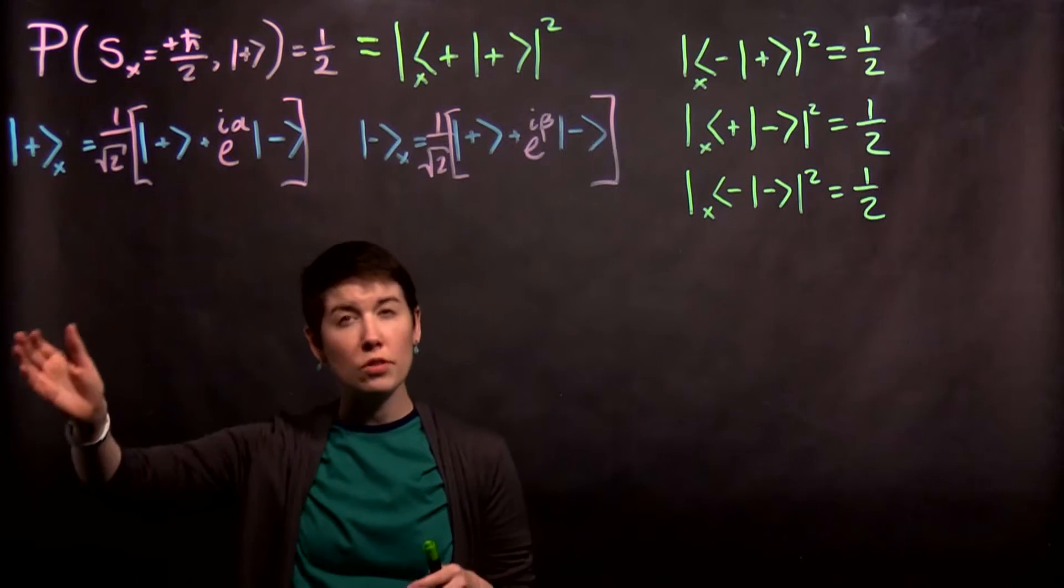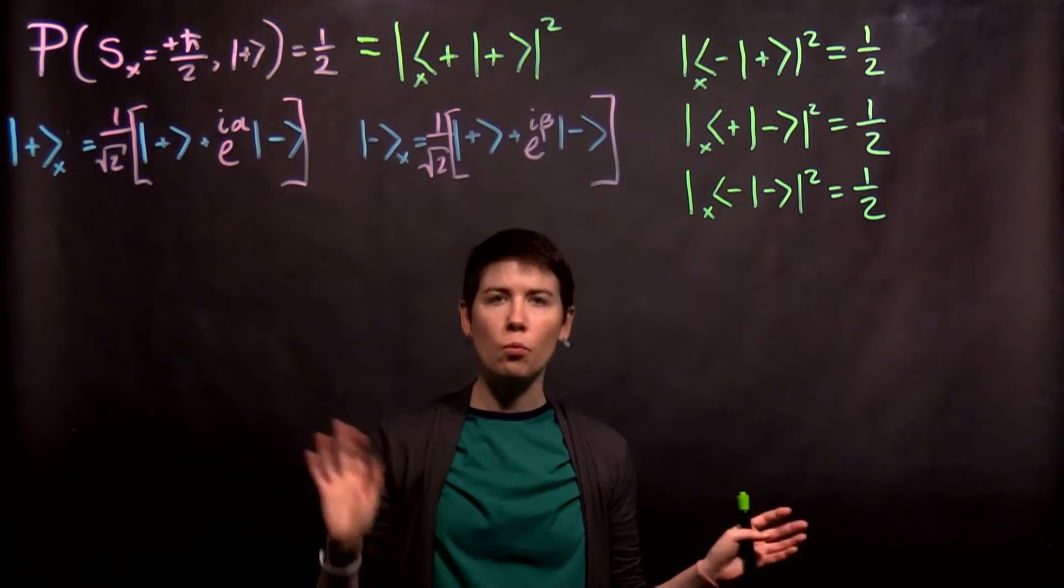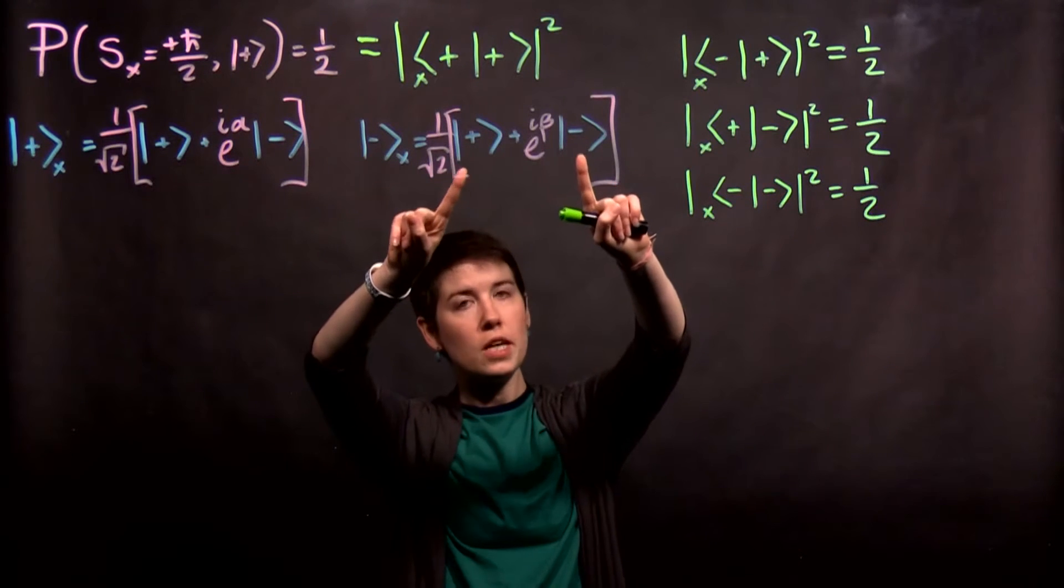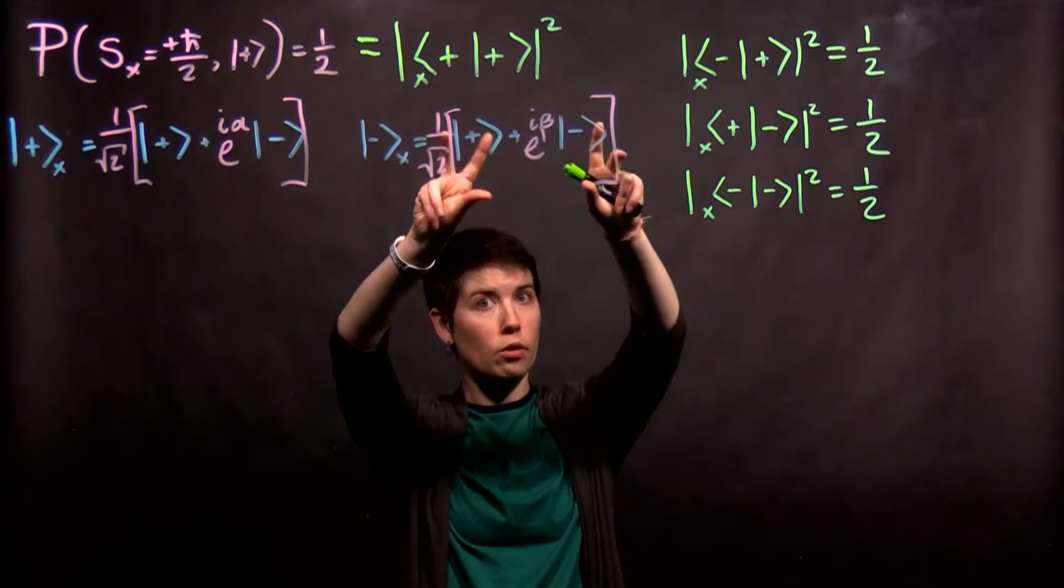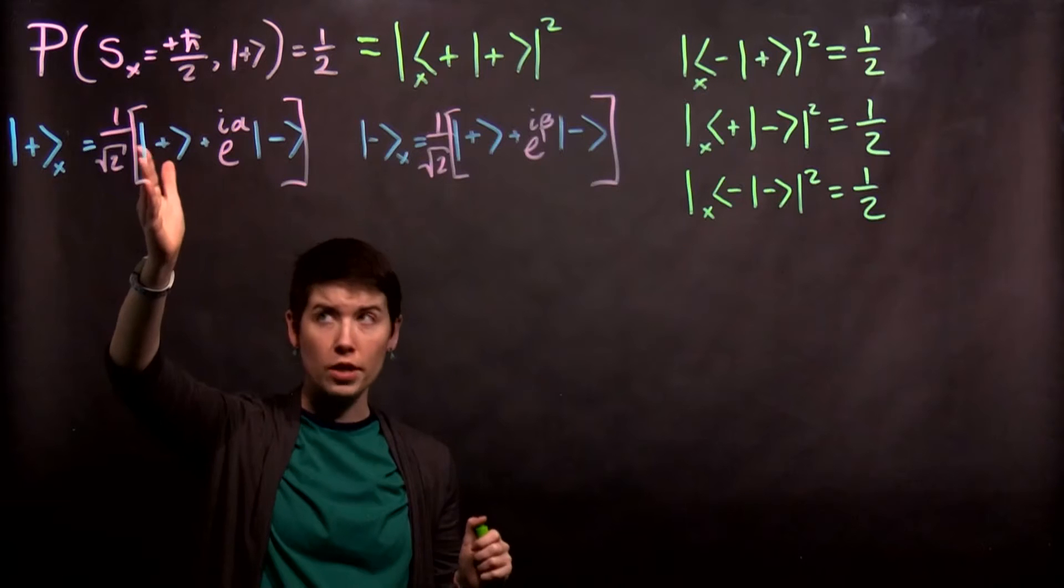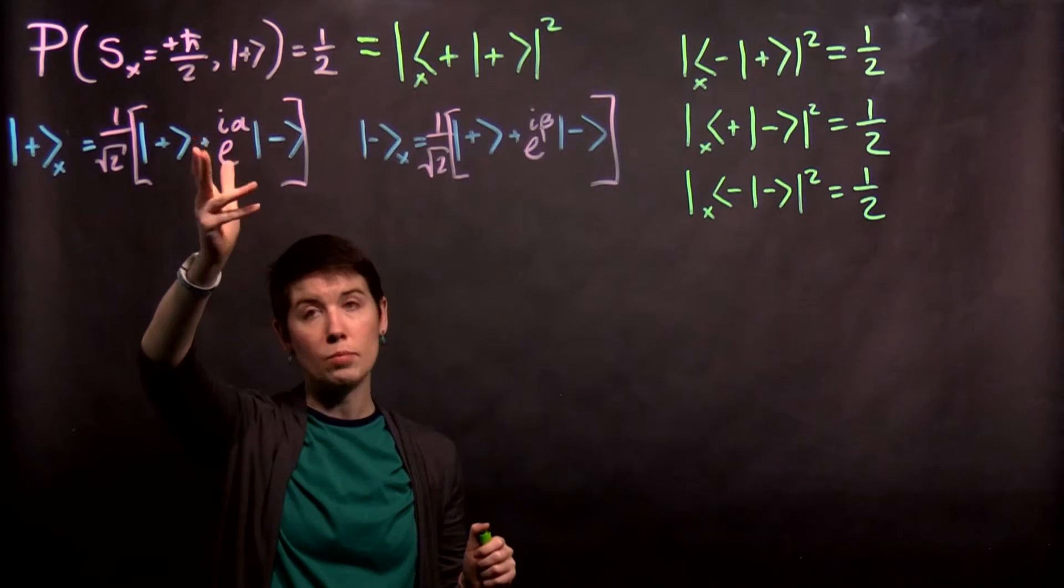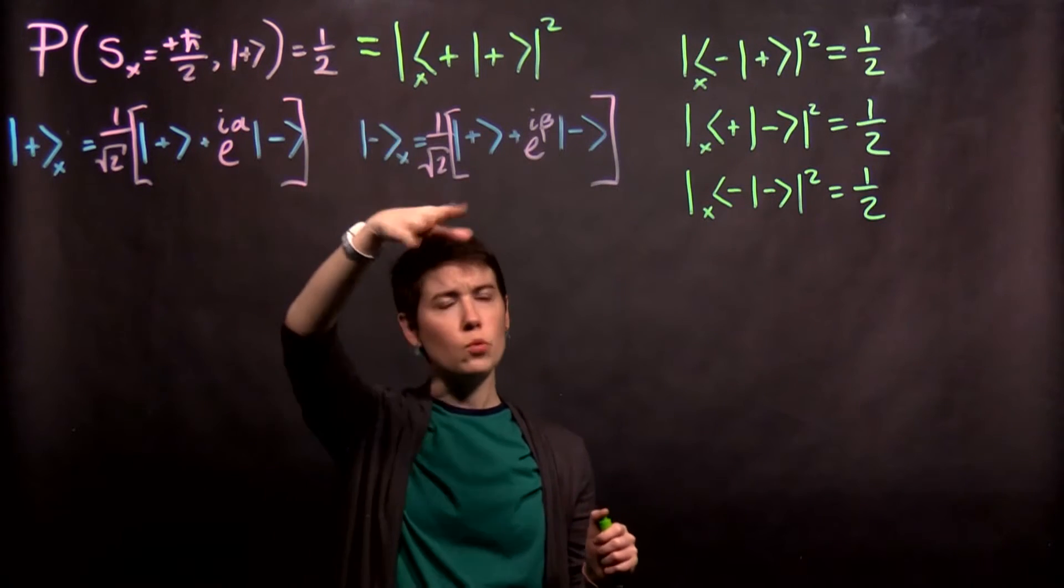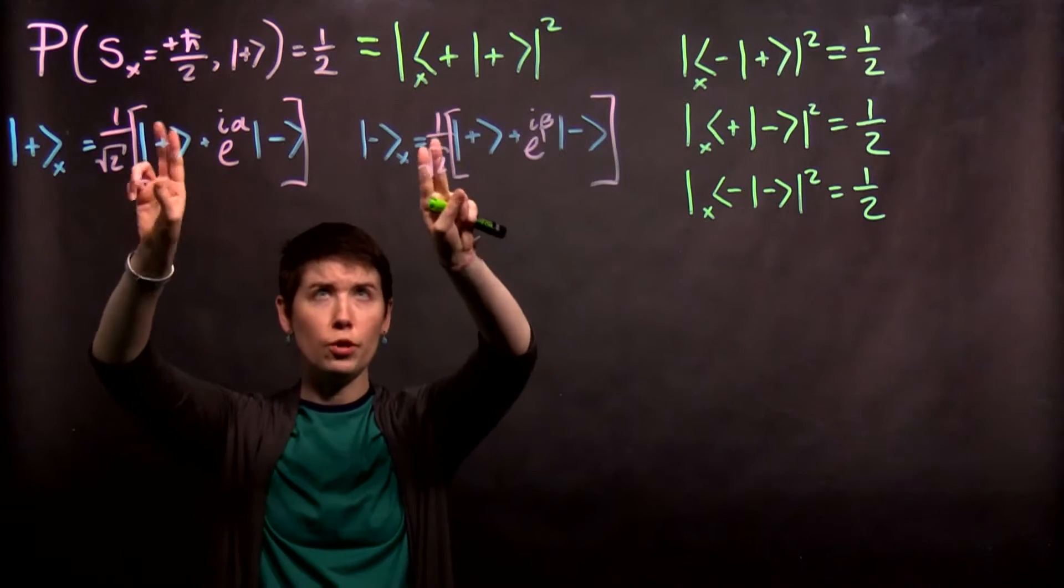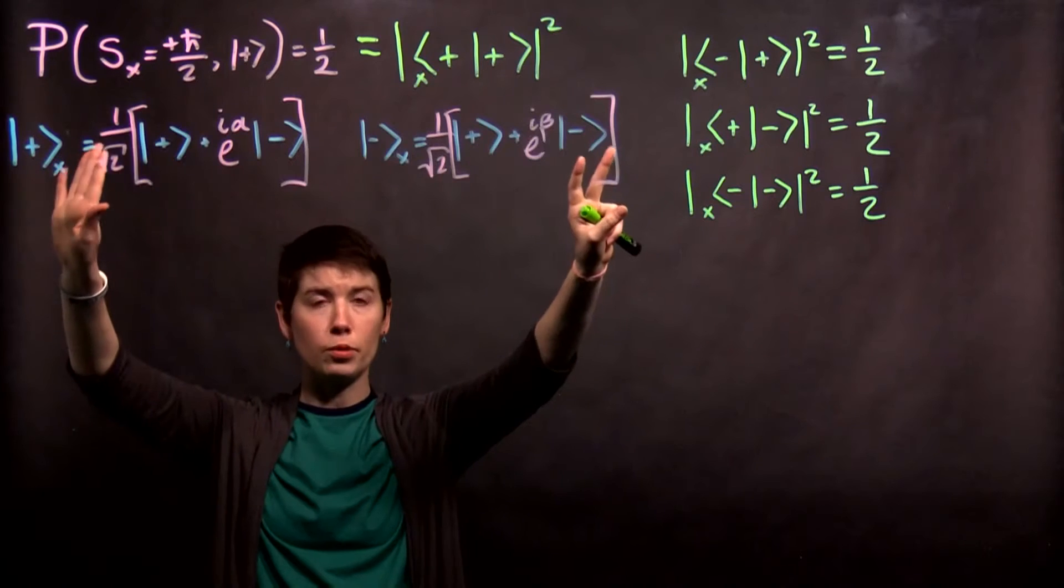Now for our state we could imagine that there's some overall complex phase that won't actually matter. What really matters is the relative complex phase between our two coefficients. So we can choose our first coefficient to be real so that the second one is going to have that complex phase, and in this case we're going to choose it to be real and positive.